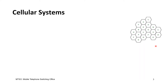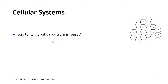To start with cellular systems, the basic principle is that the spectrum is a scarce resource and we need to reuse it. So we introduced spectrum reuse, where the geographical area is divided into cells — hence the name cellular system.